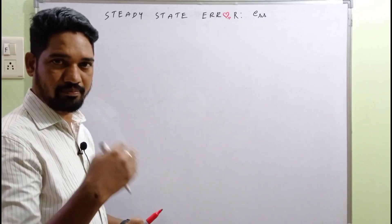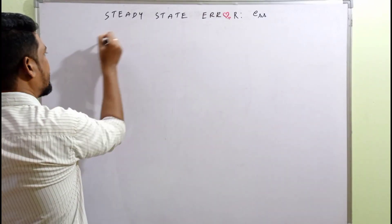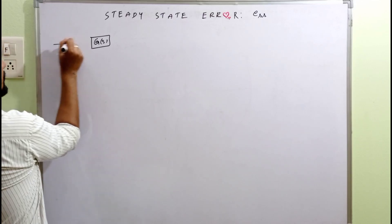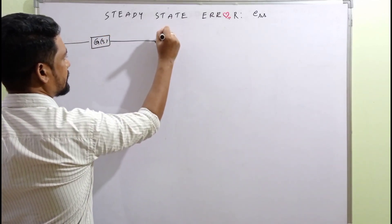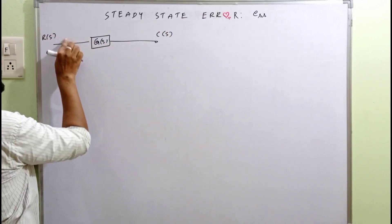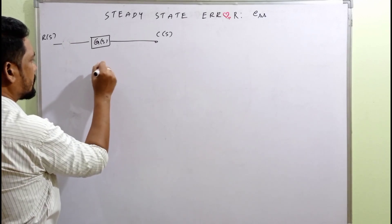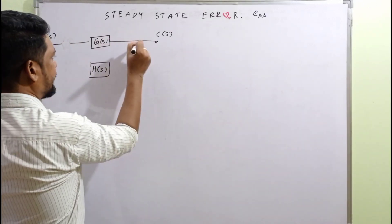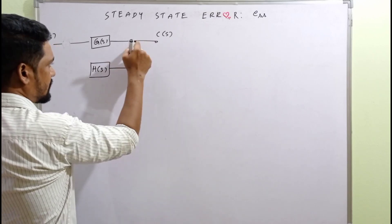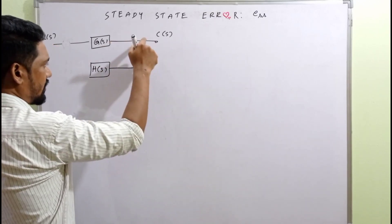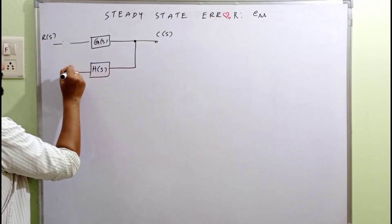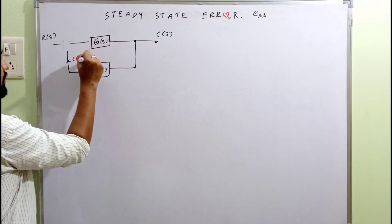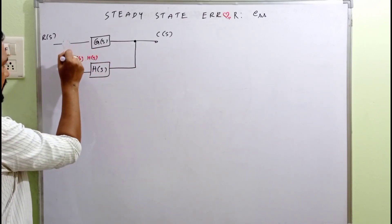From the block diagram, C(s) by R(s) — from the block diagram, we have the forward path G(s). This is C(s), and this is R(s). Here we have H(s) — in general it is unity — and the feedback signal flows as C(s) into H(s).